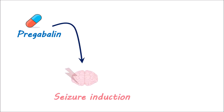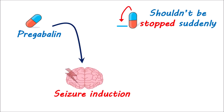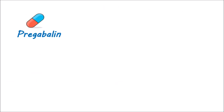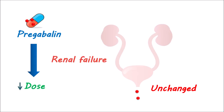As this drug reduces the induction of seizure potential, just like many of the antiepileptics, it shouldn't be stopped suddenly as it increases the risk of seizure induction. Hence, if the drug has to be stopped, the dose of pregabalin should be tapered slowly over a week to reduce the chance of any withdrawal complications. Pregabalin is primarily excreted through the kidneys, and its plasma levels highly depend on renal functionality. So in patients with renal failure, the dose of pregabalin should be reduced to minimize its toxic levels.